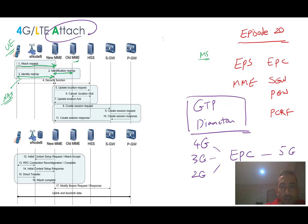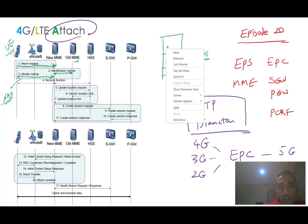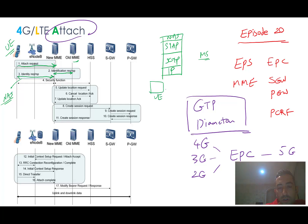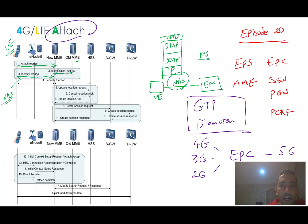This uses the NAS (Non-Access Stratum) sub-layer, as discussed in previous sessions. Between UE and the core we have IP, GTP, S1AP, and within S1AP we have NAS. NAS is used to negotiate and transfer information between UE and the EPC — similar to the DTAP protocol we had in CS between the mobile and the core network.